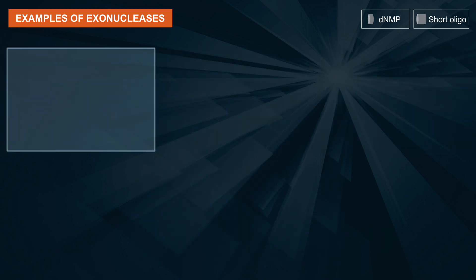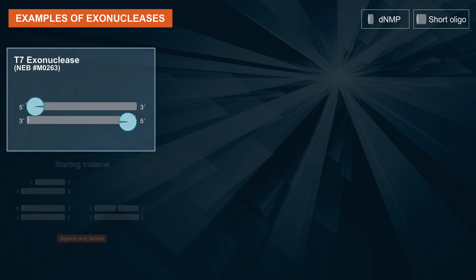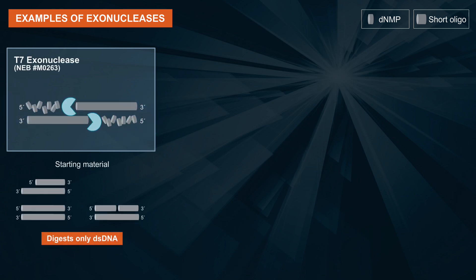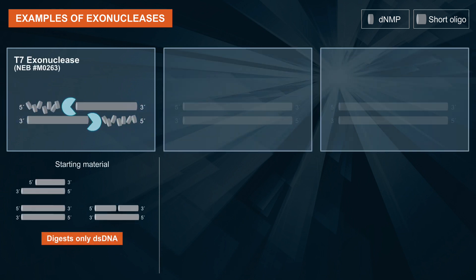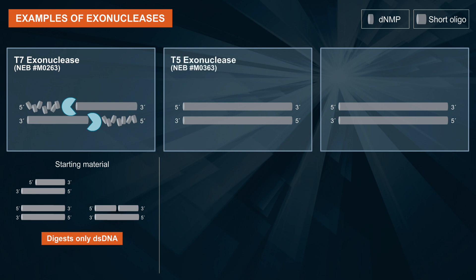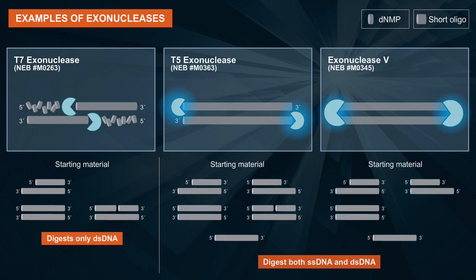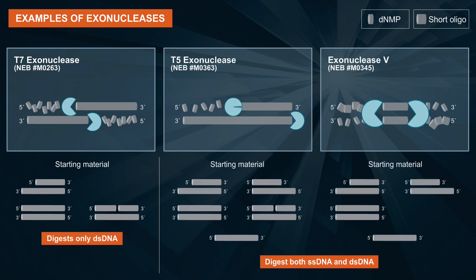Exonucleases such as T7 exo digest only double-stranded DNA, while others such as T5 exo and Exo5 can digest both single and double-stranded DNA.